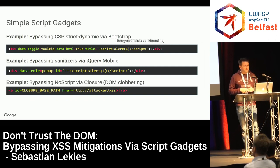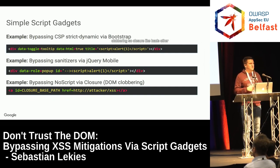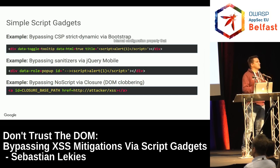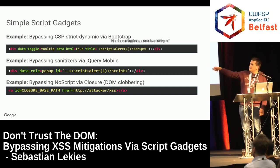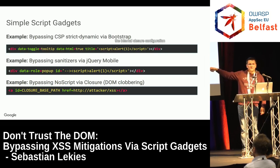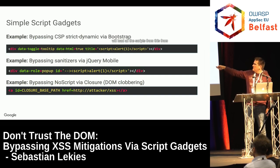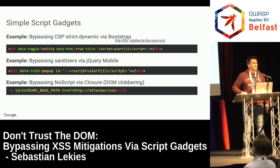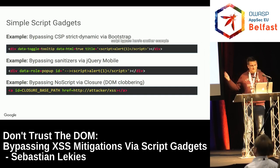Another example is the Closure library, which uses DOM clobbering as an interesting attack vector. Closure loads other JavaScript files and uses a base path to do that, which is an internal configuration property in the DOM. You can clobber that variable by injecting an A tag — because an A tag's toString returns the URL — and putting it as an ID. This overrides the internal Closure configuration property, so Closure loads all scripts from your URL. Since Closure creates script tags and appends them to the DOM, this is again a CSP bypass and also a NoScript bypass.